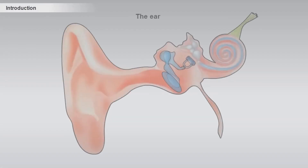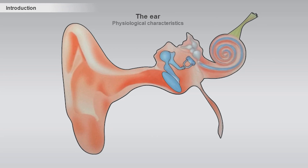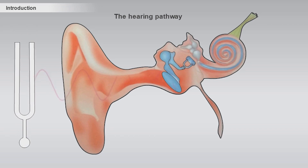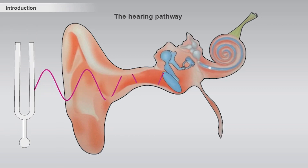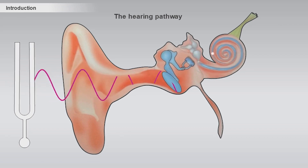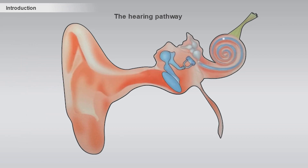This course will take you on a tour through the ear. The course will describe physiological characteristics and explain how the ear transmits sounds from the environment to the brain. The hearing pathway transforms vibrations of air molecules into a perception of sound in the brain. The pathway begins with the ear.